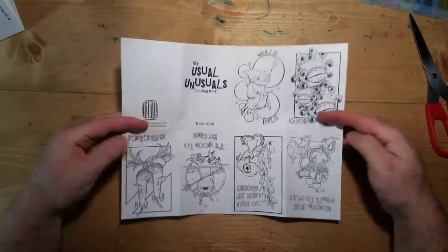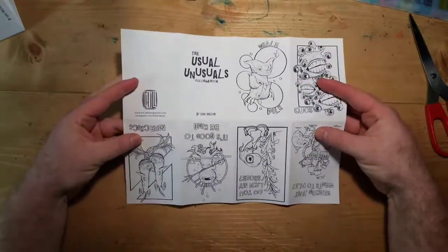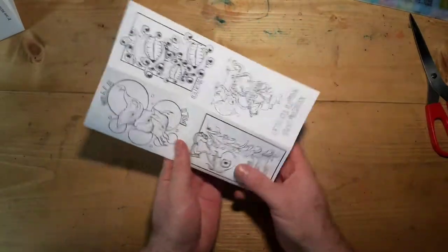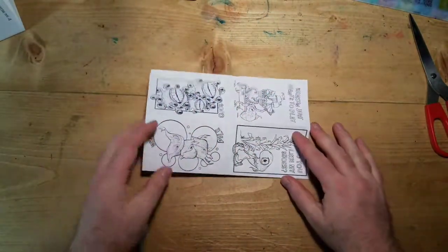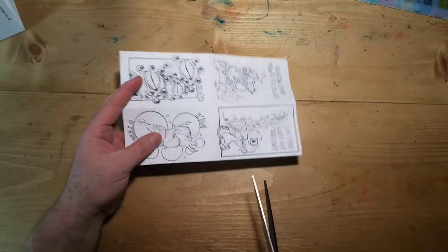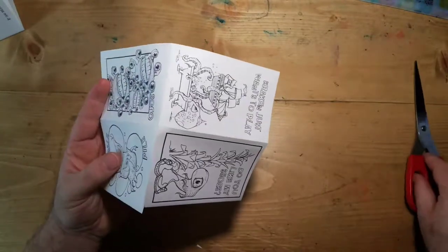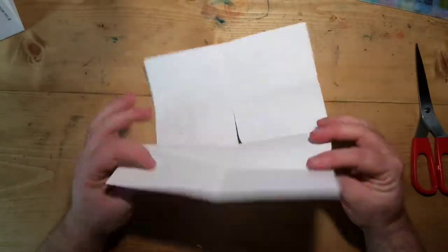Now you got all your creases, 8 little sections, and you fold it in half again and you take your scissors and you cut a slit right down the center. Not all the way, just to the center of where that fold is.